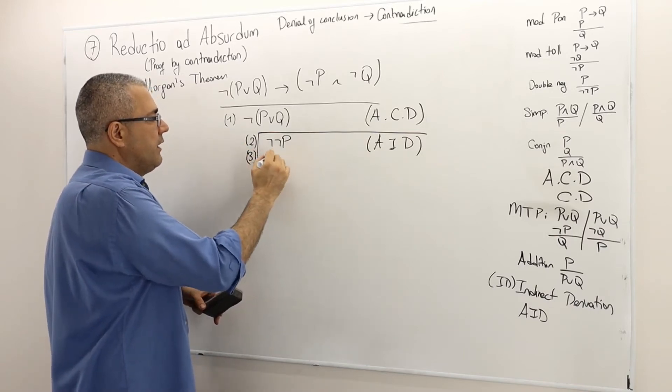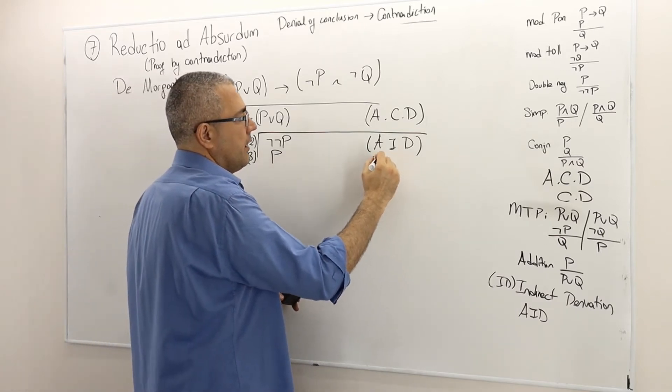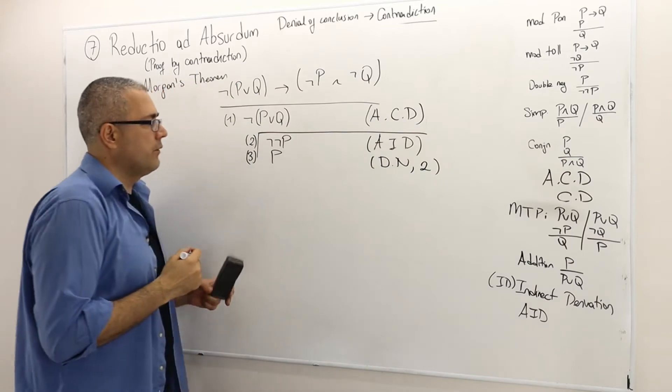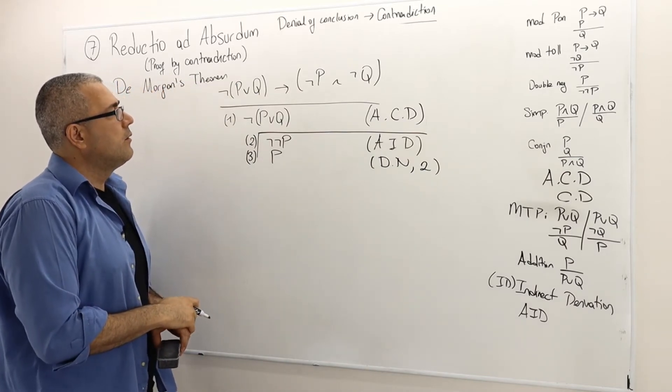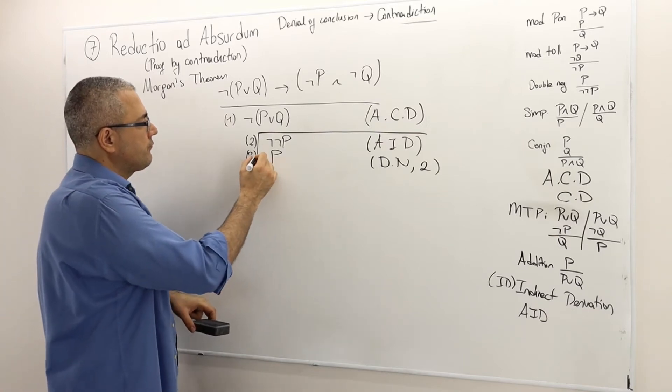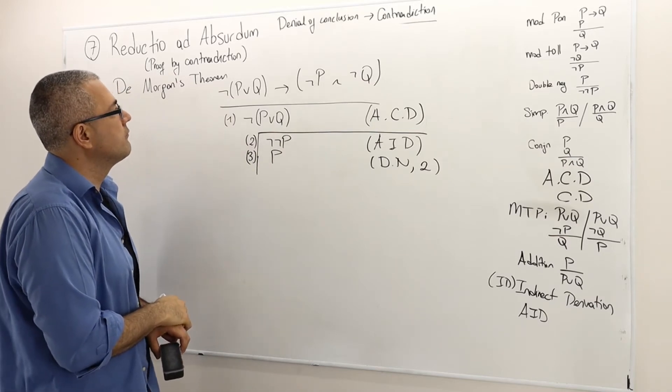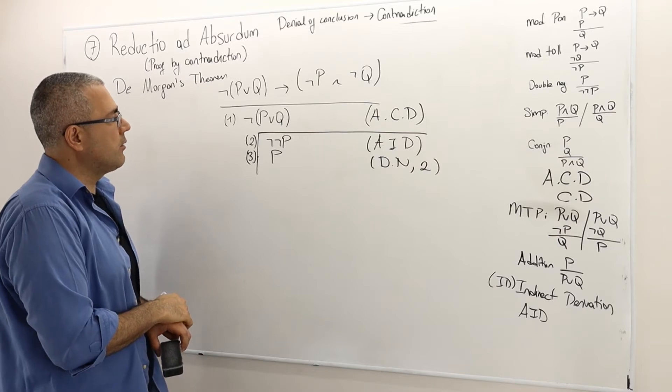Well, in line three, I can simply say this is double negation. Double negation of line two. So P must be true. What else do I know? Very well.